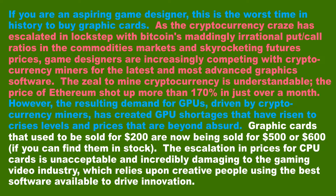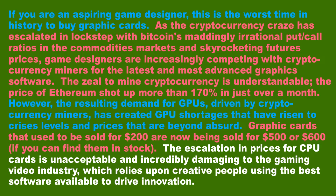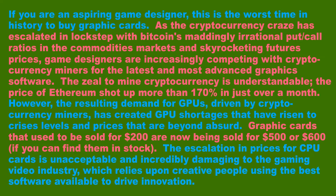Here's a sentence I can understand: GPUs are really expensive because cryptocurrency miners are buying them all up. Now there is another example — I don't care about that. Finally, we get something that looks like a conclusion: high prices are unacceptable because it takes creative people using the best software to drive innovation. So from the three lines we could actually understand, we can answer the four questions.